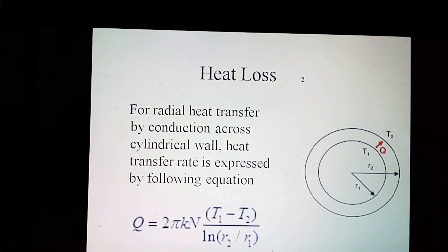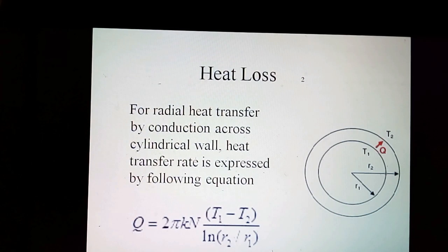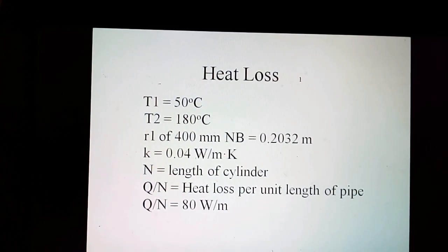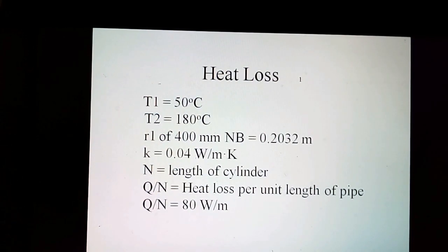For radial heat transfer by conduction across a cylindrical pipe wall, the heat transfer rate is expressed by the standard equation. In this case, T1 is equal to 50 degrees centigrade, T2 (steam temperature) is equal to 180 degrees centigrade. R1, corresponding to 400 mm diameter pipe, is equal to 0.2032 meters.